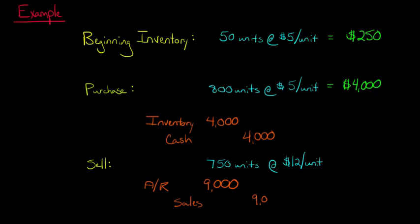And then we credit sales for $9,000. And if you're wondering, where did that $9,000 come from? Well, we took 750 units and we multiplied that by $12 a unit. So that's where we got $9,000. So we debit accounts receivable and we credit sales. That's one journal entry.